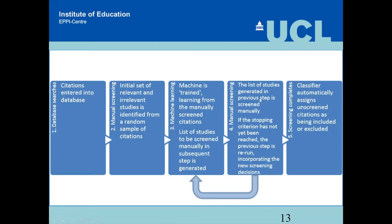In stage four, we screen the top of the list. In EpiReviewer, we screen the next 25. After 25, the machine reruns its model, relearns, and re-ranks everything still remaining to be screened. The reviewer carries on screening, and this cycle of learning and manual screening continues until we reach some stopping criterion — either we've looked at everything, or we think we've found all the relevant citations.